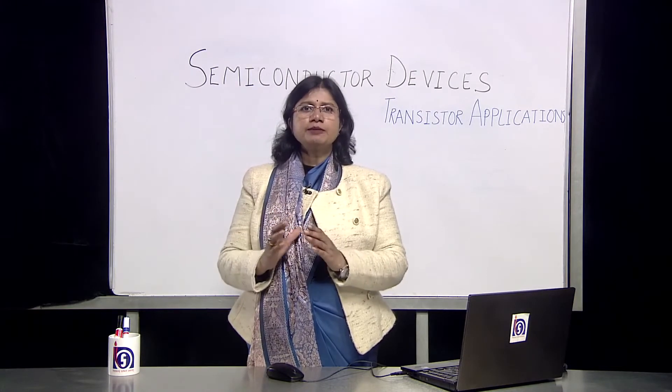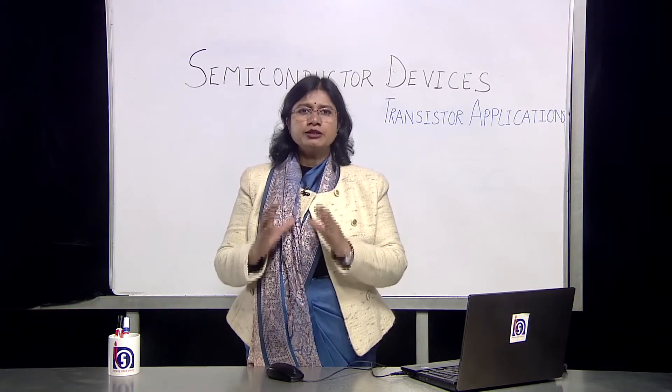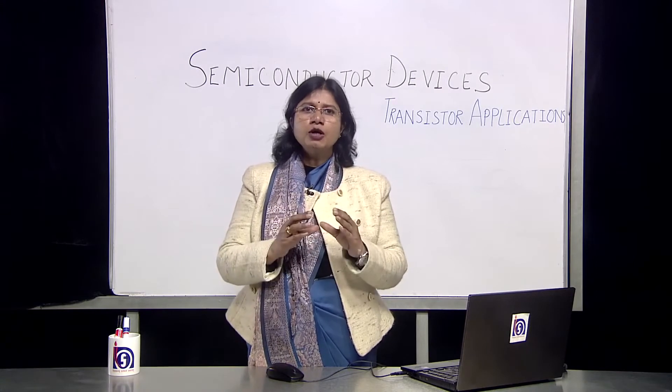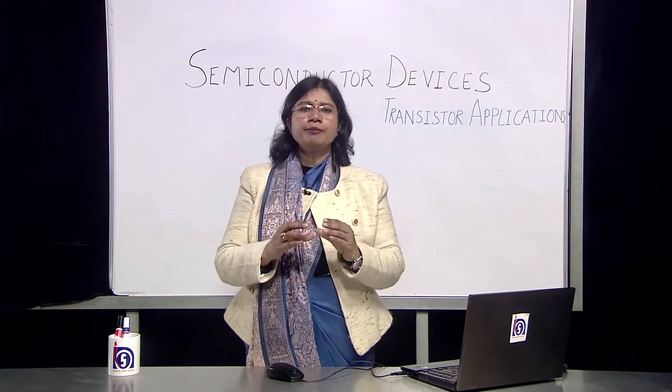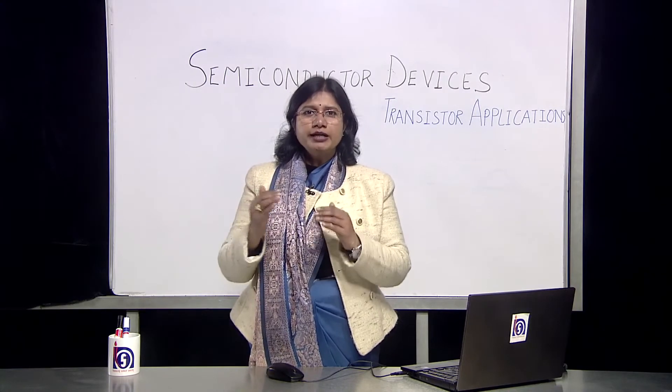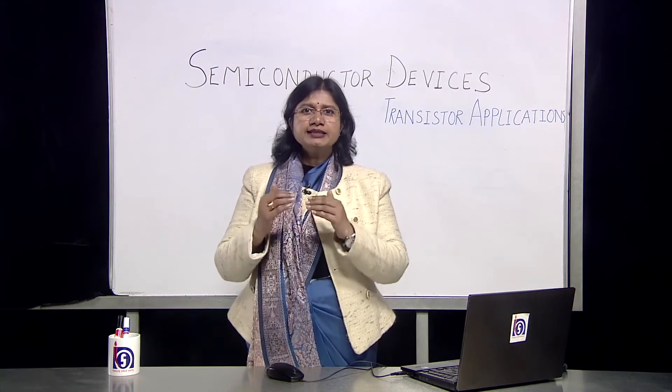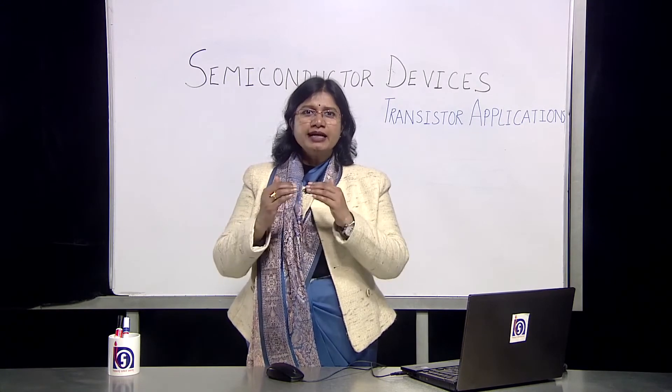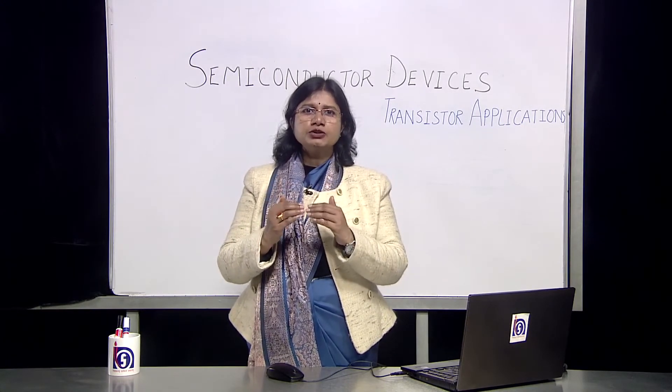This is an intrinsic property of the common emitter configuration that for small amount of current in micro amperes we get a corresponding output current in milli amperes. On decreasing the value there is a stage reached when the collector current is almost raised to zero.